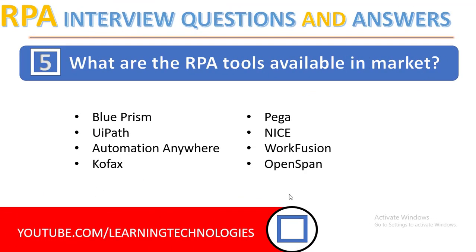Next: what are the different RPA tools available in the market? Nowadays, there are many RPA tools available, each providing various functionalities according to customer need. These include Blue Prism, UiPath, Automation Anywhere, Kofax, Pega, Nice, WorkFusion, and OpenSpan. But the top three tools in today's market are Blue Prism, UiPath, and Automation Anywhere.